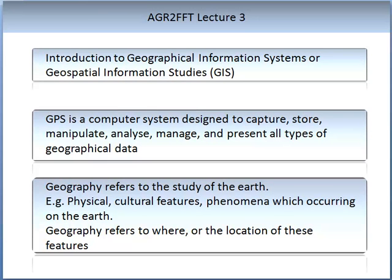Geographical Information Systems, or as it is sometimes called Geospatial Information Studies, is abbreviated to GIS. It is a technology based on a computer system that is designed to capture, store, manipulate, analyse, manage, and present all types of geographical information.